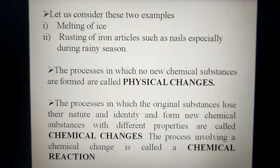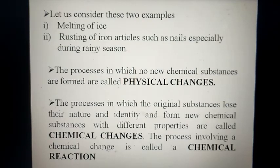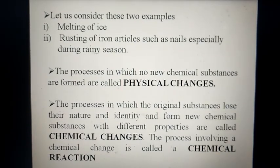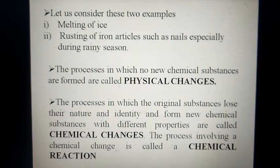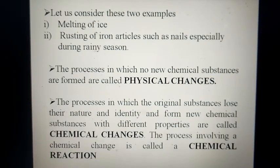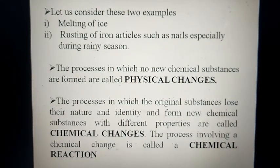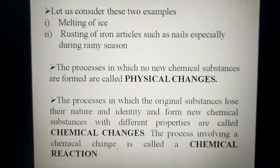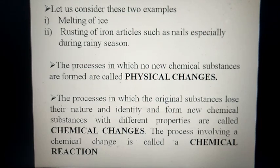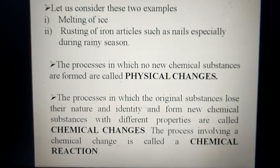Now, I am going to consider a second example. Rusting of iron articles such as nails, especially during rainy season. This is rust. It is a completely new substance. So in this process, the original substance like iron loses its nature and identity and forms a completely new chemical substance, that is rust, which has completely different properties. So this process is called chemical changes. And the process involving a chemical change is called a chemical reaction.